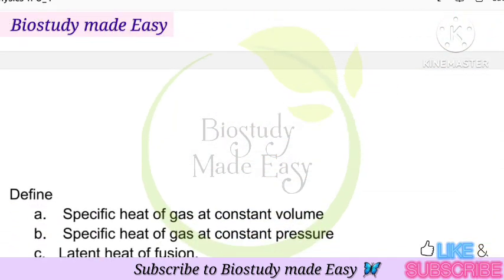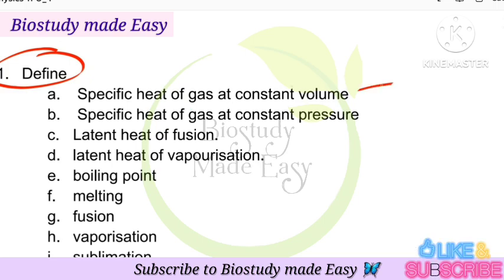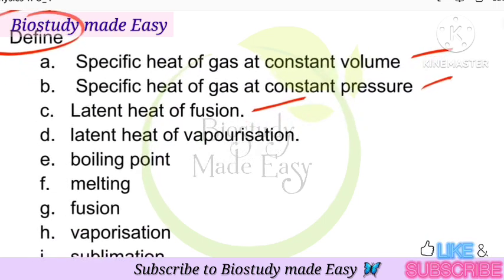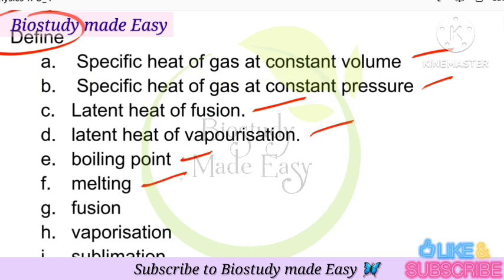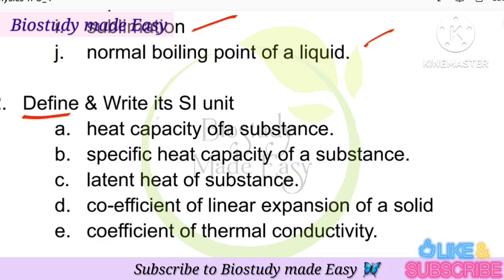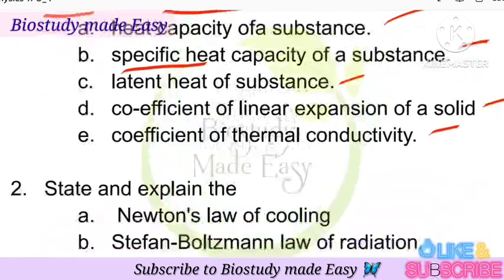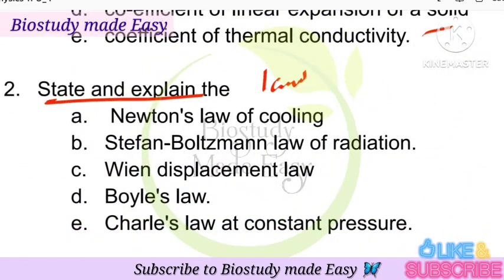Next, Thermal Properties of Matter chapter. Important definitions to know: specific heat of gas at constant volume, at constant pressure, latent heat of fusion, latent heat of vaporization, boiling point, melting point, melting and fusion, vaporization, sublimation, normal boiling point of a liquid. Also definitions and SI units of: heat capacity of a substance, specific heat capacity, latent heat of a substance, coefficient of linear expansion of a solid, coefficient of thermal conductivity. Important laws: Newton's law of cooling, Stefan-Boltzmann law, Wien's displacement law, Boyle's law, Charles' law at constant temperature.